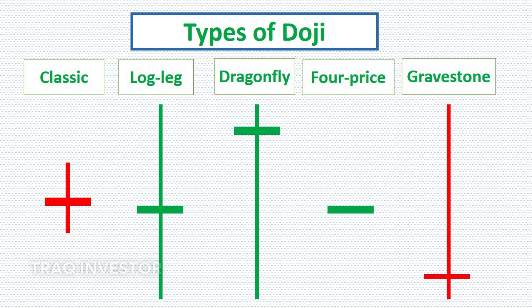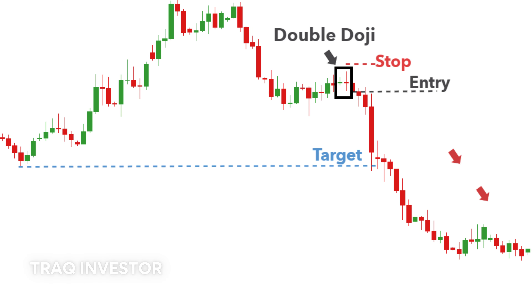Enter the doji. When market open and close nearly match, forming a cross or plus sign, it indicates a struggle between buyers and sellers, resulting in no net gain. Alone, a doji is a neutral signal, but it can be found in reversal patterns like the bullish morning star or bearish evening star.